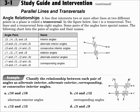Angle relationships. A line that intersects two or more lines at two different points in a plane is called a transversal. In the picture here, T is the transversal because it intersects lines M and N. This creates eight angles, and those eight angles can be grouped into different types.